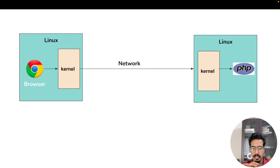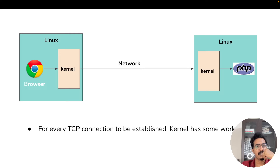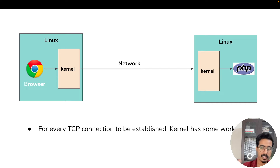It's your operating system that handles the networking stack — specifically the kernel. The OS kernel handles and maintains the TCP state and TCP connection for you. For every TCP connection, the kernel has to do some work: it allocates buffers to handle incoming and outgoing messages. So for every open TCP connection there is a small memory footprint, and CPU is involved as well.